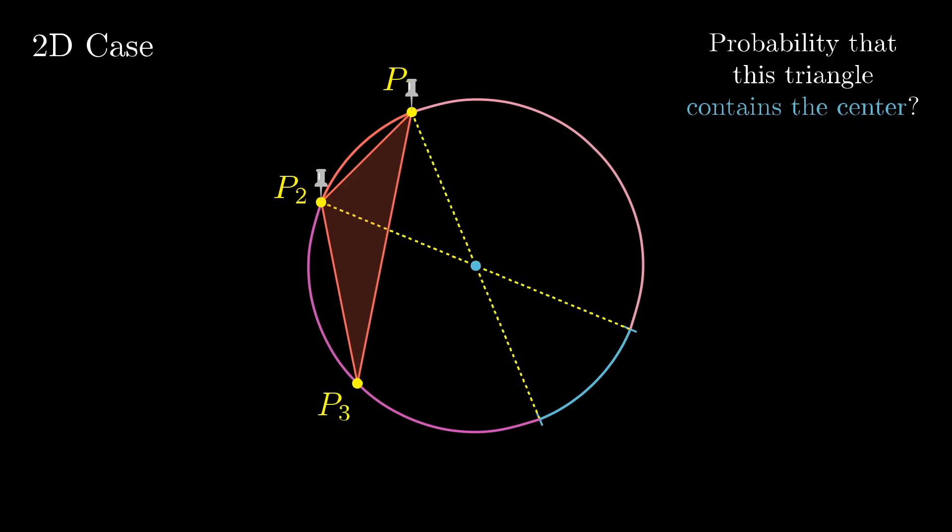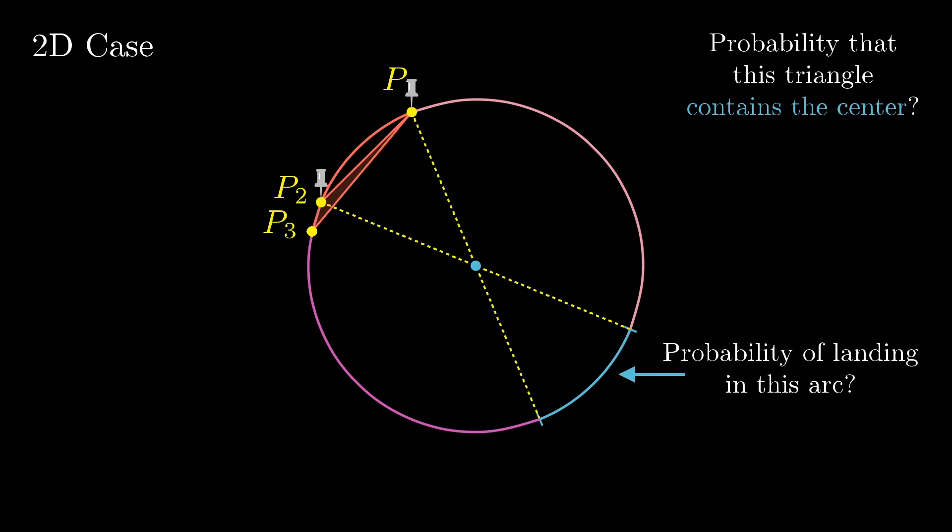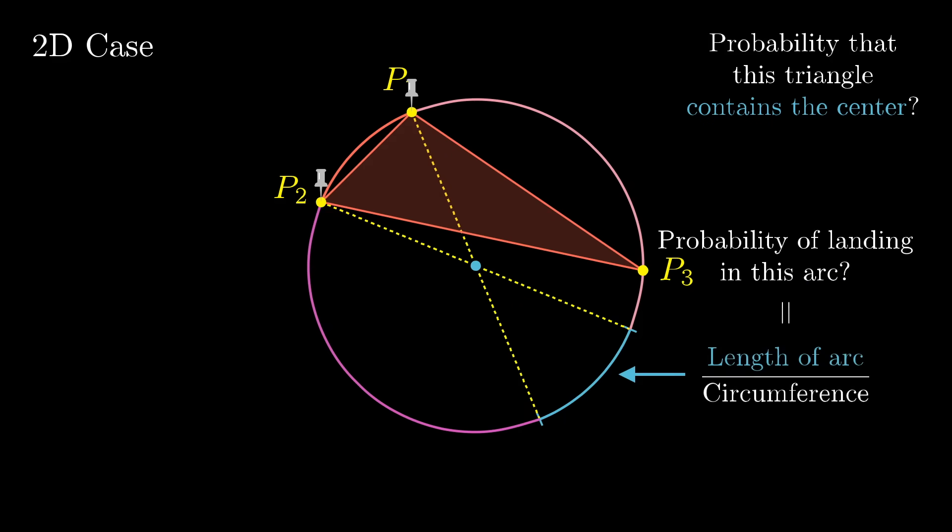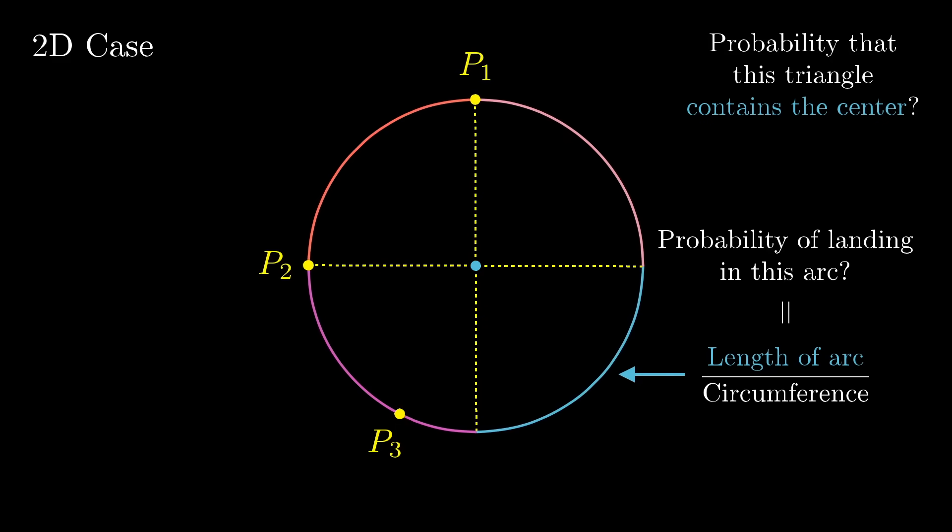We're assuming here that all of the points of the circle are equally likely. So what is the probability that p3 lands in that arc? It's the length of that arc divided by the full circumference of the circle, the proportion of the circle that this arc makes up. So what is that proportion?